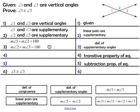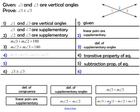Based on steps 1 through 3, we use the transitive property of equality for step 4. The transitive property states that if A equals B and B equals C, then A equals C. Here, both equations equal 180, so we can say the measure of angle 1 plus the measure of angle 2 equals the measure of angle 2 plus the measure of angle 3.